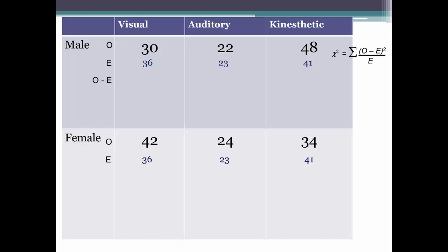Observed, 30, minus the expected, which you calculated earlier at 36, is negative 6. Square that, and you'll get 36. Take that number, 36, and divide it by the expected, 36, and you'll get 1.